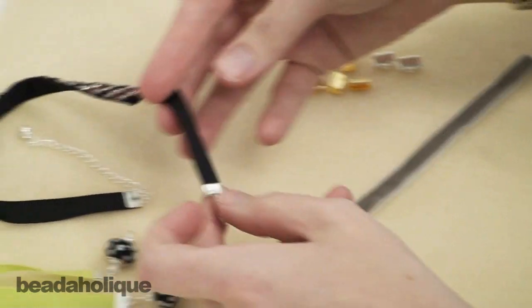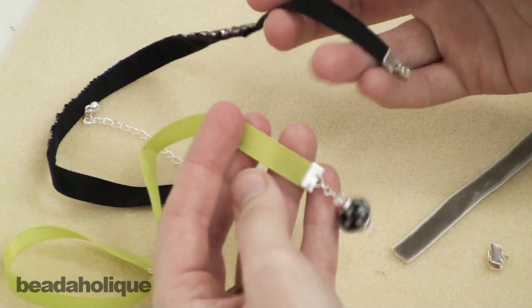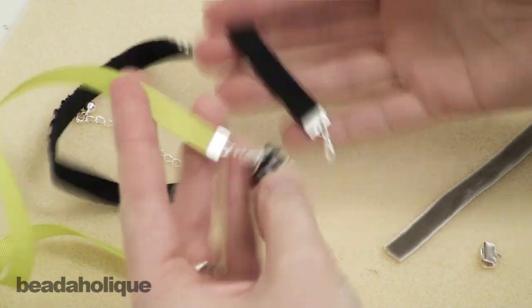You can see it gives a nice finished look to the end of the ribbon and the little loop on there gives you something to attach a clasp or a charm to.